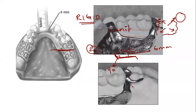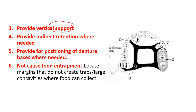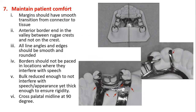In a maxillary major connector, the connector has to be at least six mm away from the gingival margin, it has to be parallel to the gingival margin, and if it has to cross the gingival margin, it should do so at an angle of 90 degrees. So to recap: minimum six mm away from the gingival margin, parallel to the gingival margin, and crossing at 90 degrees.